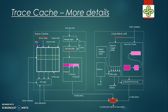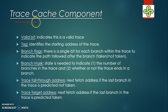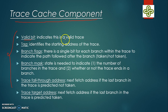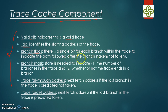Let us look at the trace cache components in detail. The first is the valid bit, which indicates that the trace is valid. The second is the tag, which identifies the starting address of the trace. The third is branch flags — a single bit for each branch within the trace to indicate whether the path followed after the branch is taken or not taken.